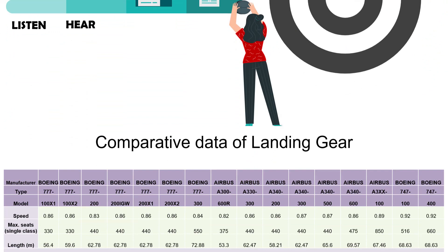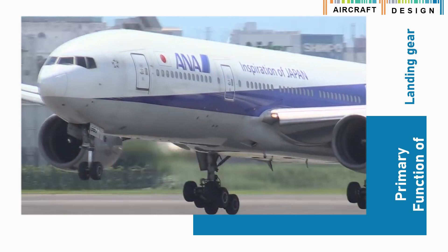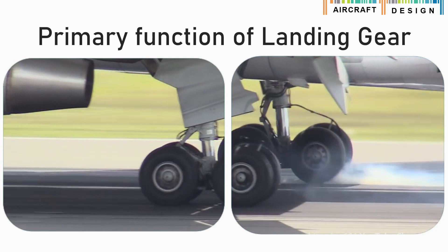Before starting any primary design, the first and foremost step is to collect the relevant data. Here I have collected data for a large passenger aircraft carrying 440 passengers. Landing gear helps to keep the aircraft stable on the ground during loading, unloading, and taxiing. It also facilitates takeoff by allowing aircraft acceleration and rotation with the lowest friction, and absorbs the landing shock during the landing operation.